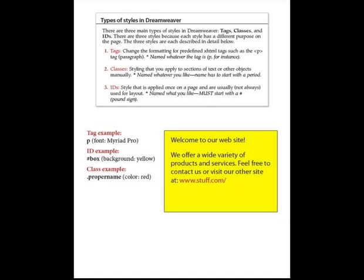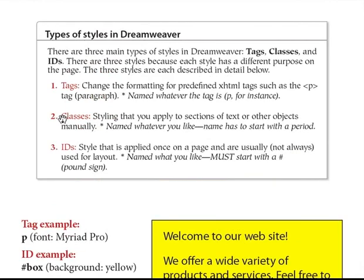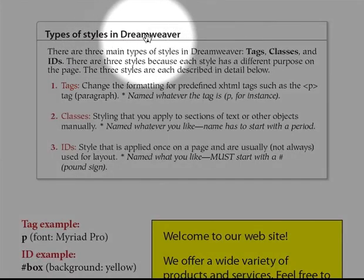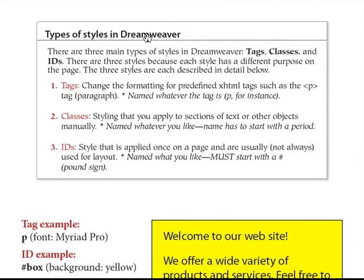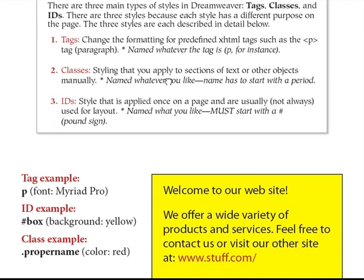The next thing we should discuss are the types of styles that we can use when creating CSS. Types of styles in CSS — we have three: tags, classes, and IDs.